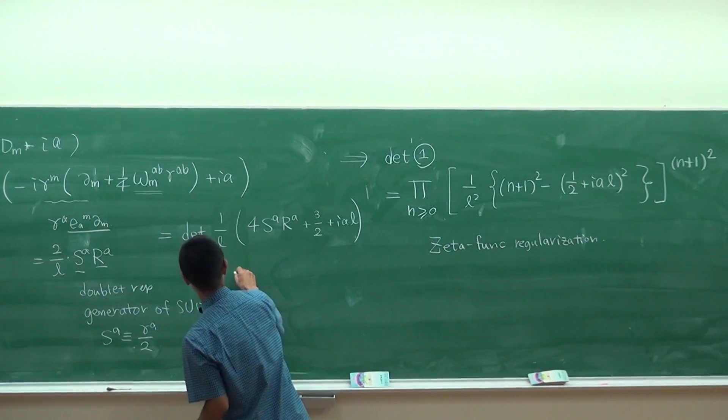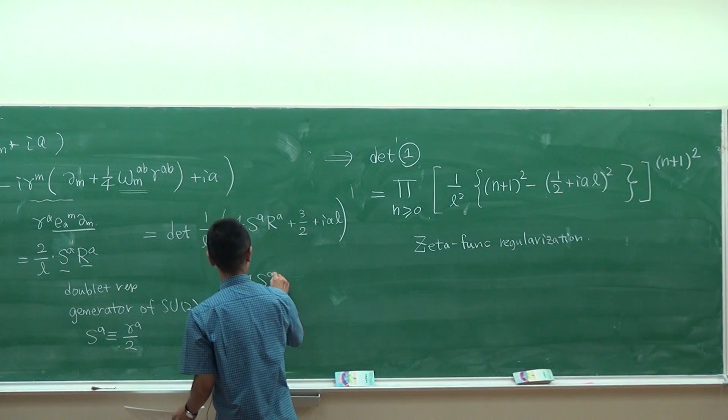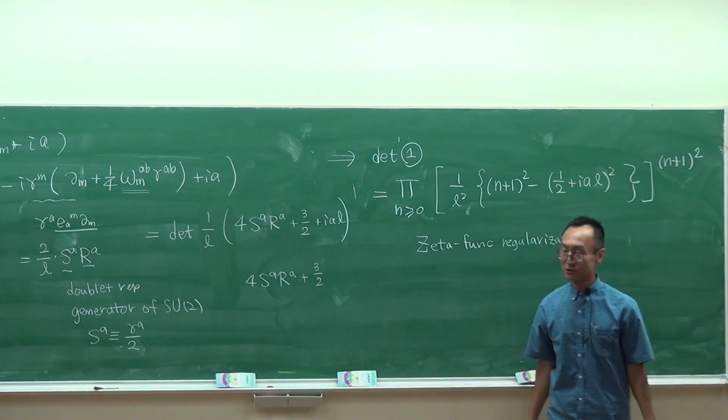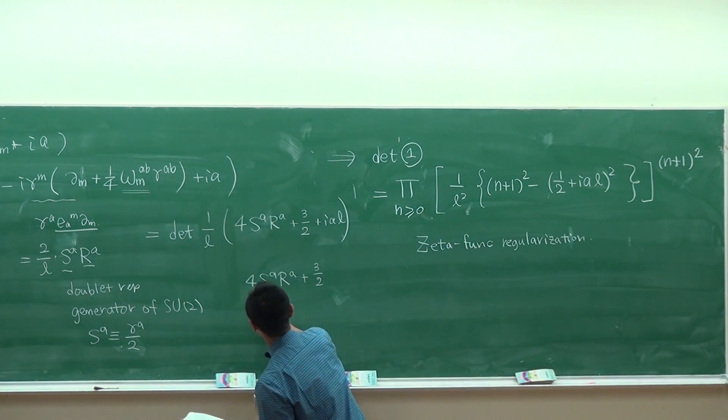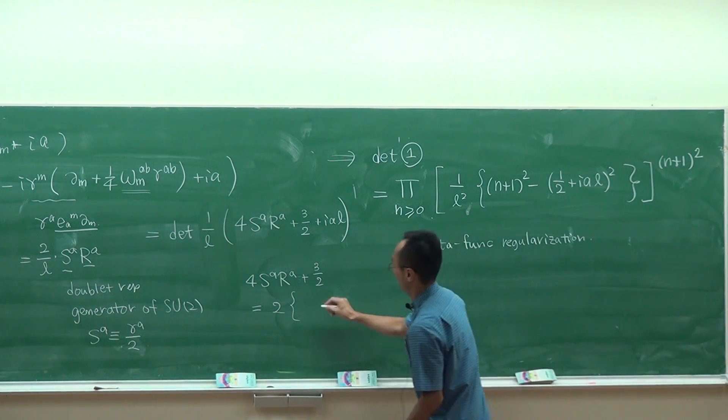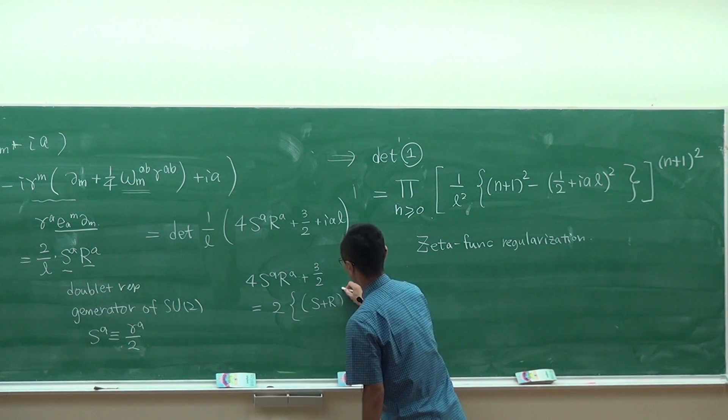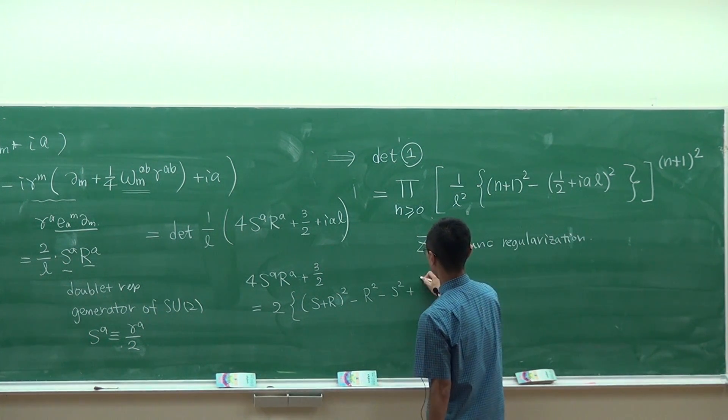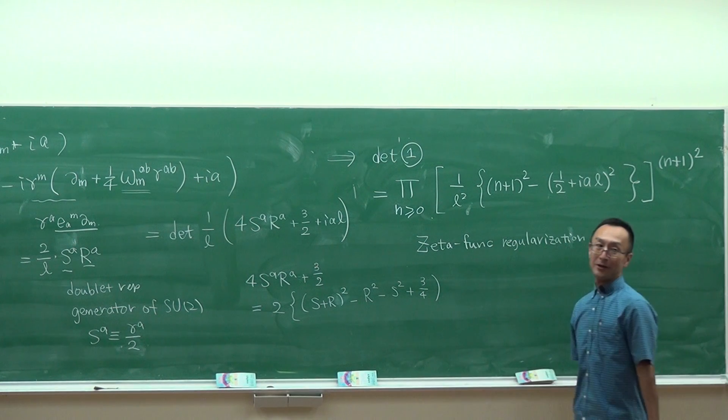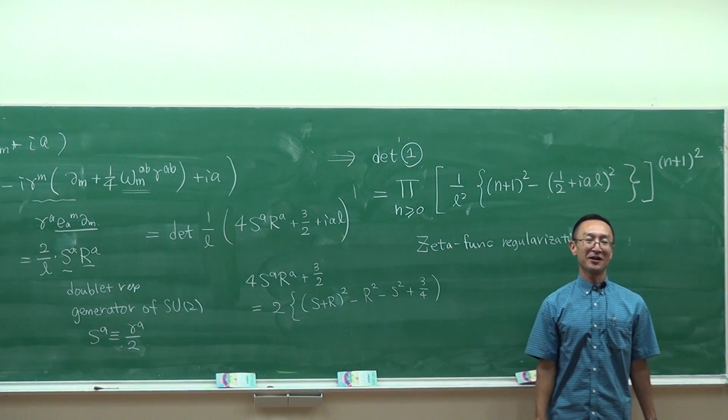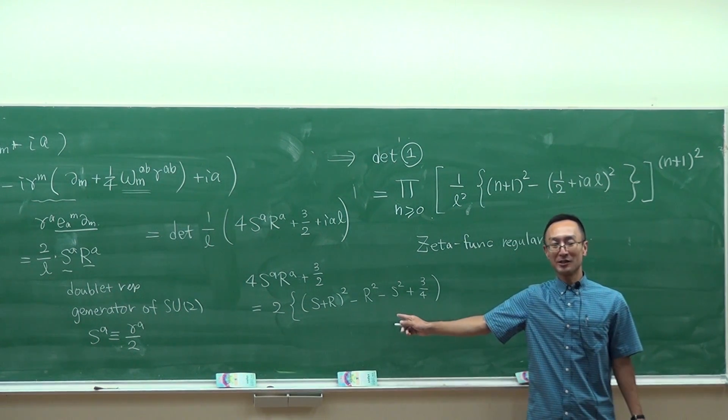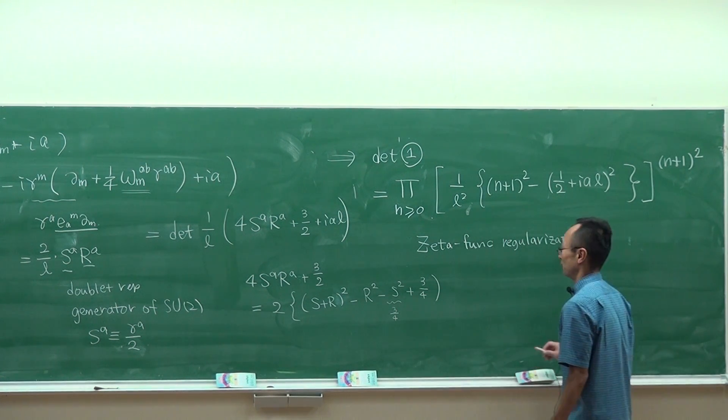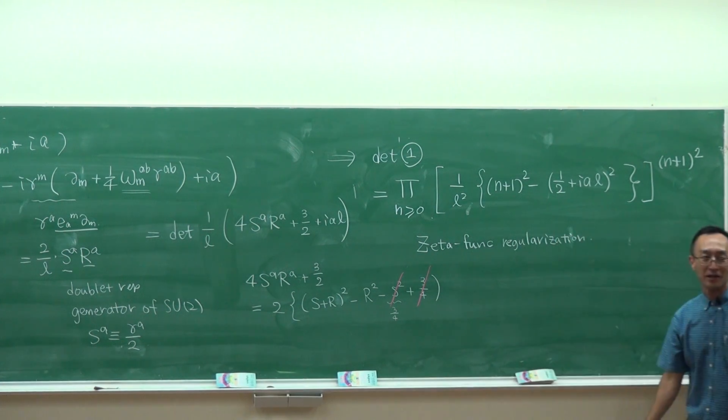Now the interesting thing is that 4 times S^A R^A (P + P)/2 can actually be rewritten as 2(S + R)² - R² - S² + 3/4. Actually, S² is the angular momentum squared in the doublet representation, so this is nothing but 3/4, so I can eliminate these two terms.